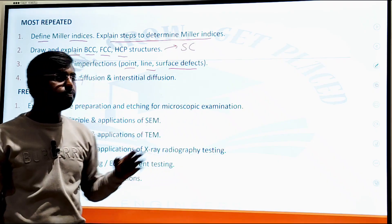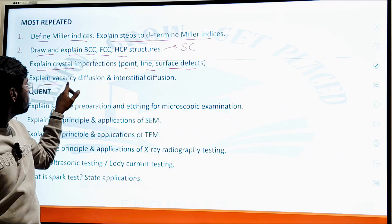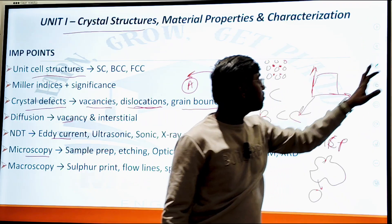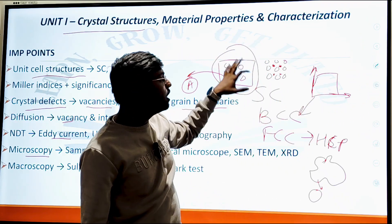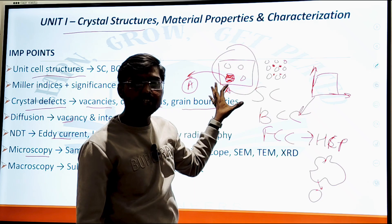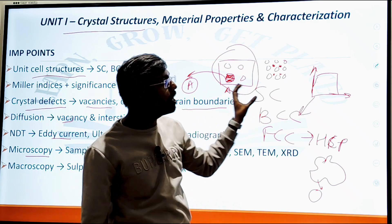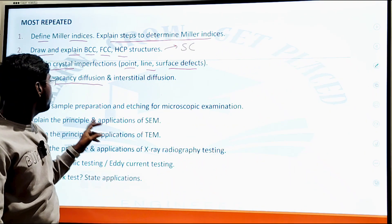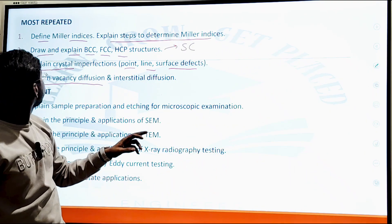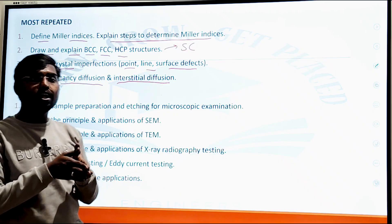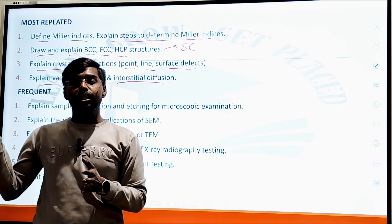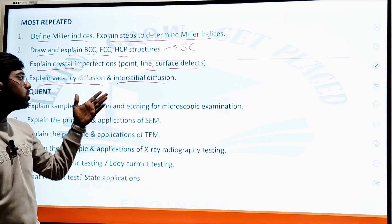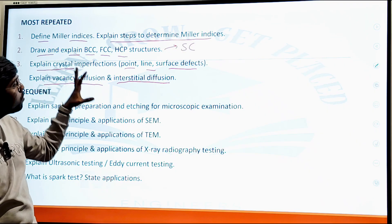Crystal structure defects — point, line, and surface defects — are three important topics. Explain vacancies and diffusion: if one atom leaves its position in a regular crystal structure, a vacancy is created. For interstitial defect, instead of the missing atom, another atom occupies that position; this is called interstitial diffusion, which is also an important topic.